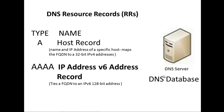Then you have a quad-A record, which is four A's. This type of resource record will map the fully qualified name to an IPv6 address, which is a 128-bit address. So the host A record basically associates the fully qualified domain names or host names of computers to their associated IP address.